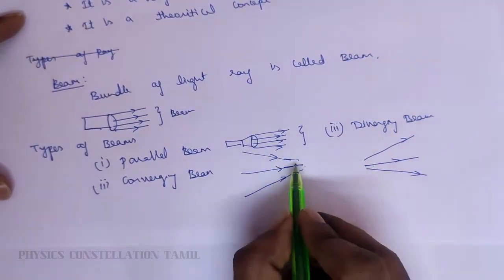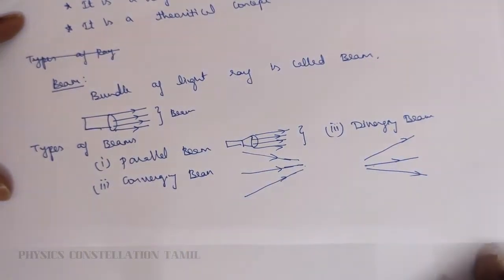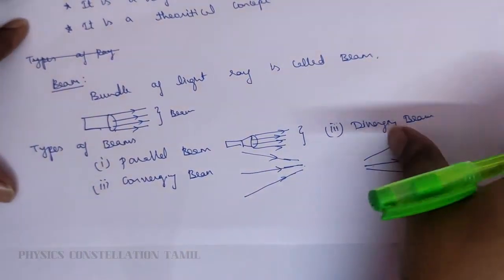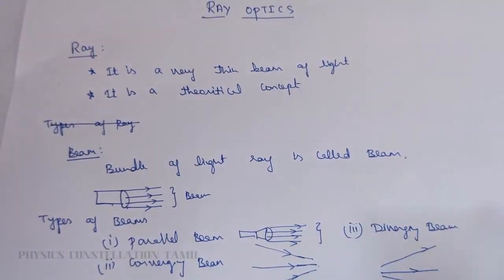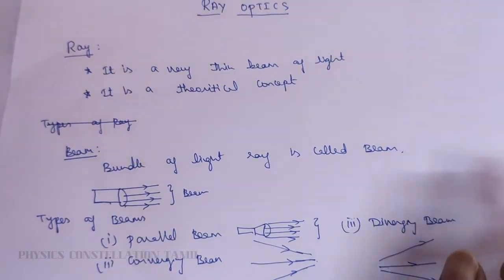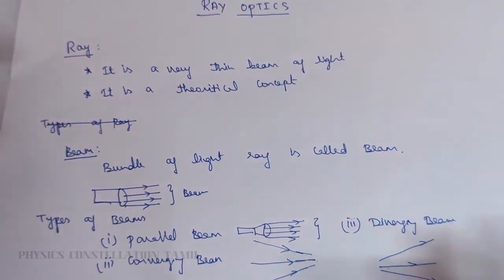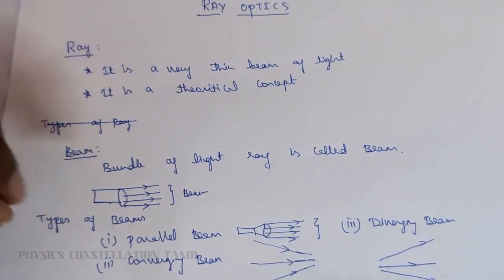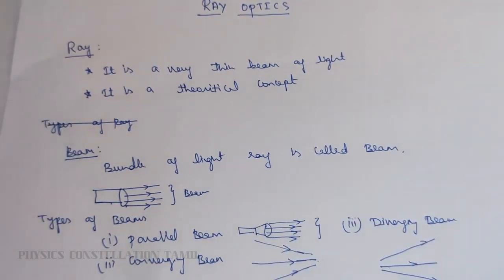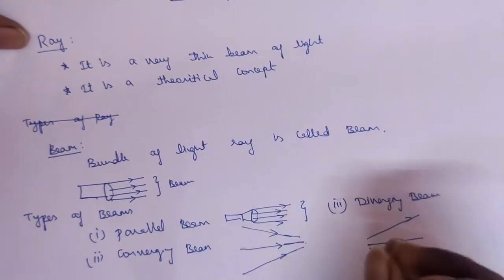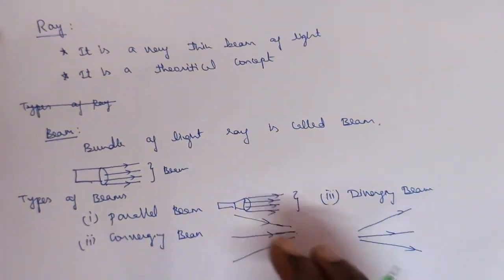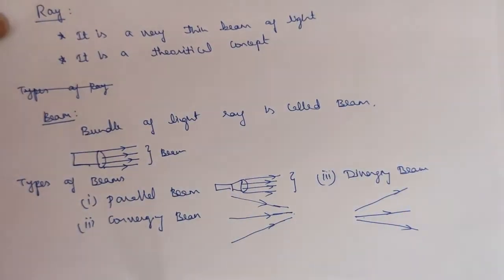So in perspective, this is a diverging beam. A ray is a thin beam of light — a theoretical concept. A beam is a bundle of light rays; the beam is actually there, it is not a theoretical concept. Beams are real and used for analyzing purposes.